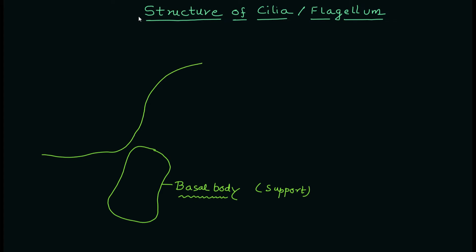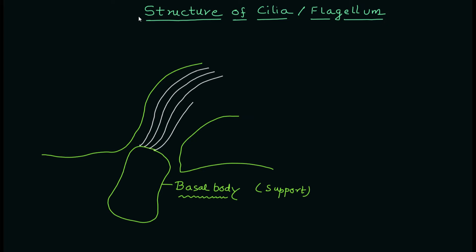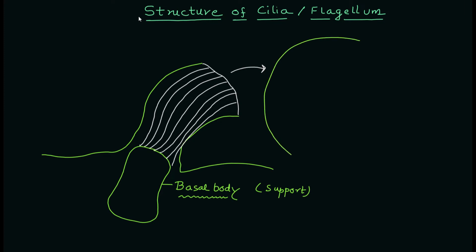From the outside you see the extension which is the plasma membrane. In the case of eukaryotic cilia and flagella, you have the extension of the plasma membrane — it is continuous, so the cell's plasma membrane continues onto this particular organelle. One important thing to note is that the lipid composition and the protein composition will change specifically in the case of cilia and flagella as compared to the cell membrane.